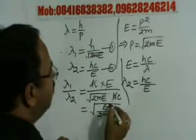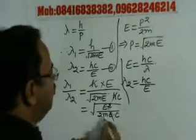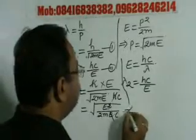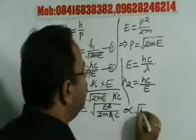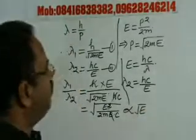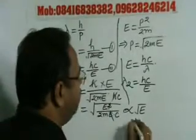Here we can have E squared cancels. Now M and C are constants, so we can say that this is proportional to under root E. So the correct option is option B.